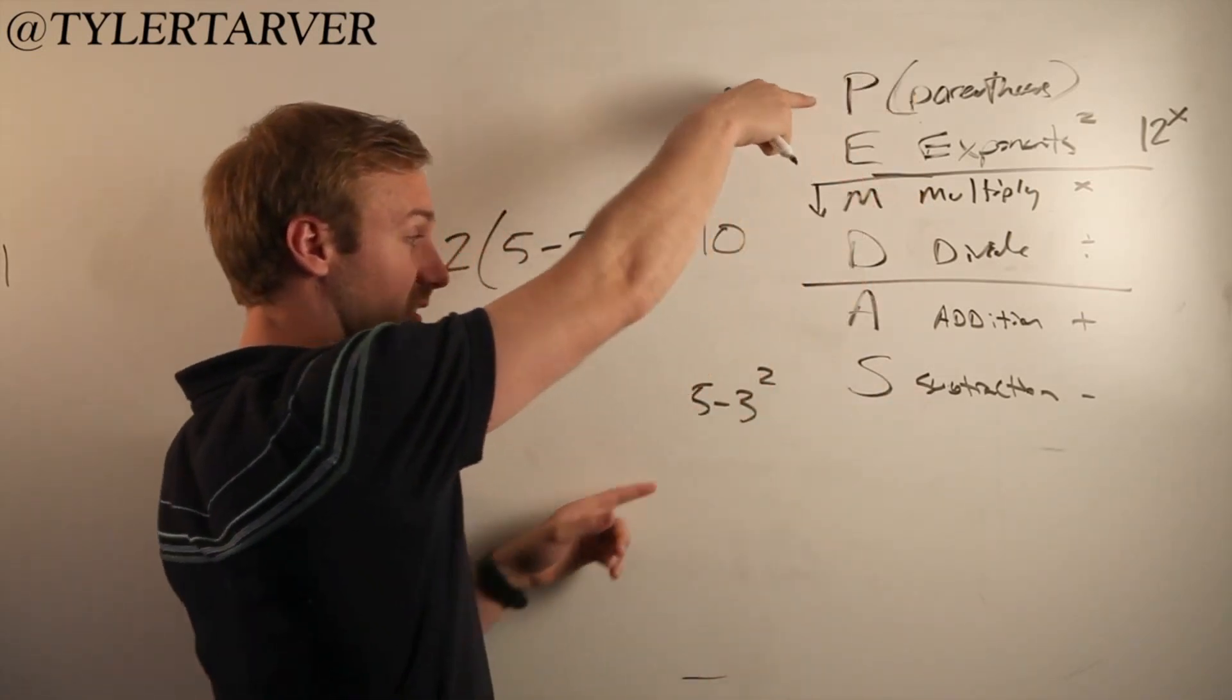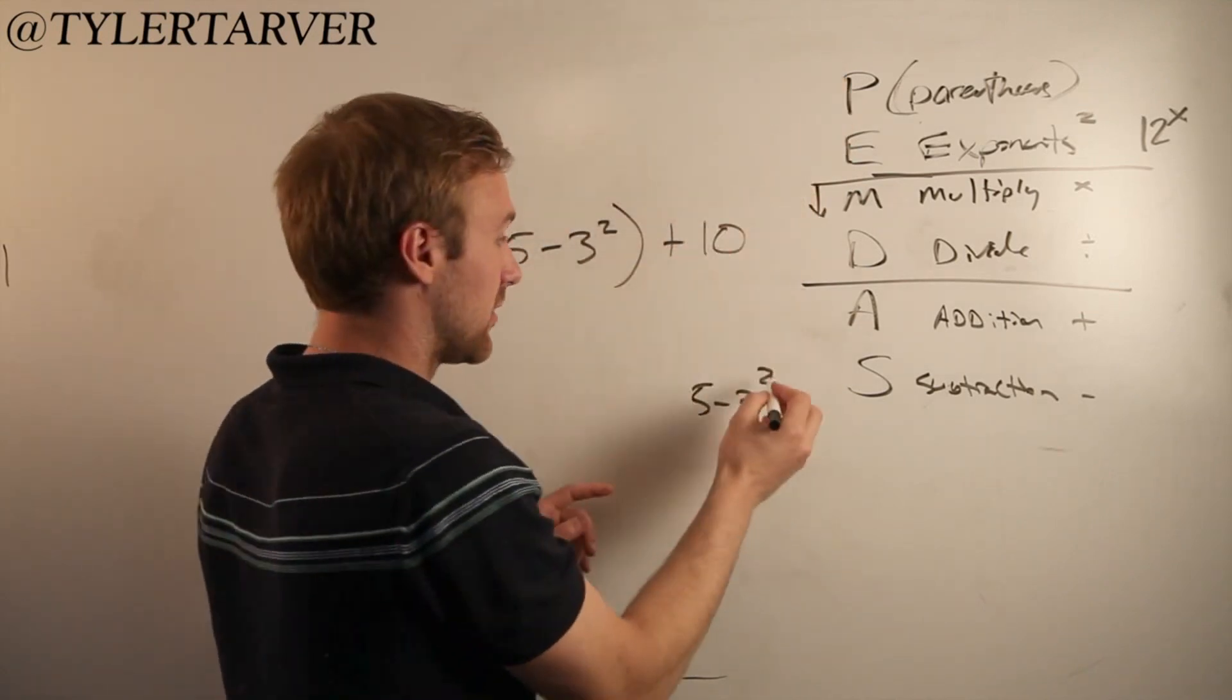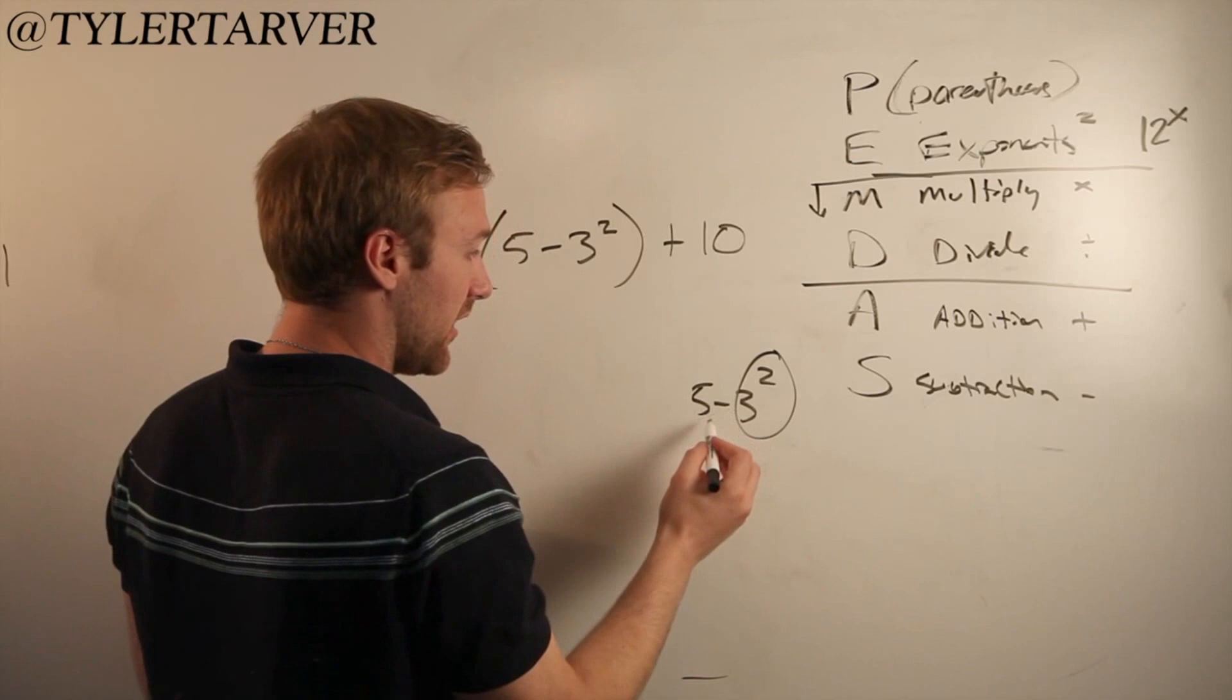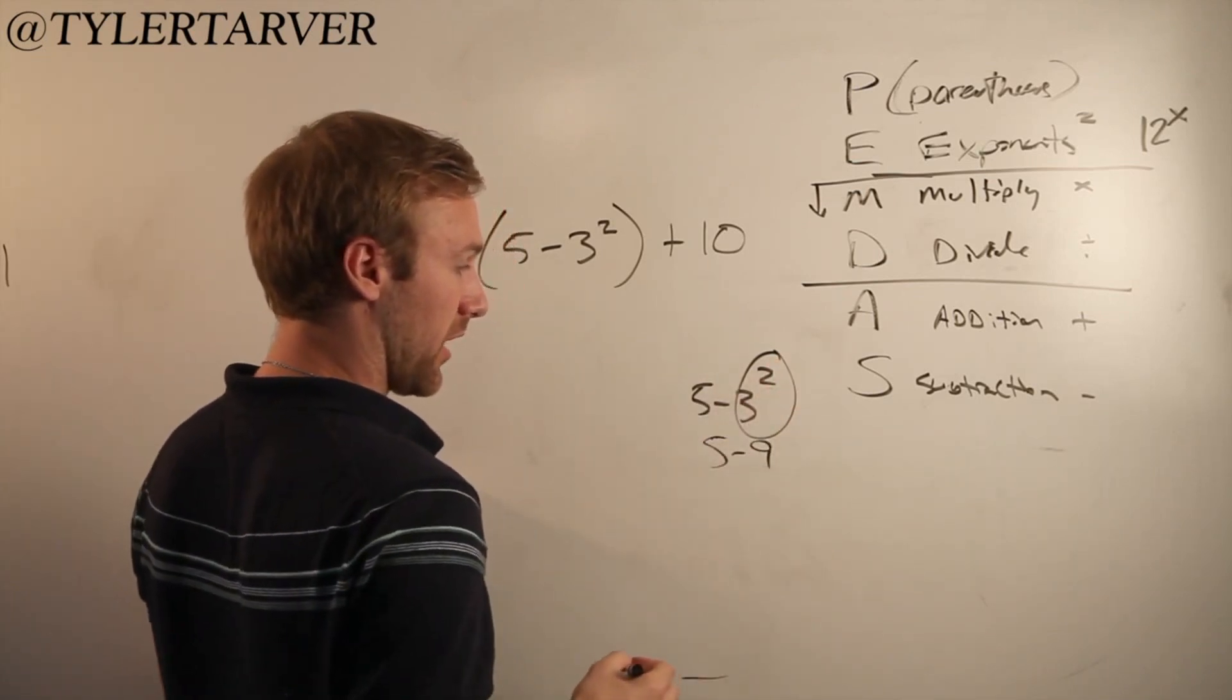Are there any more parentheses in here? No. Do we have any exponents? Yes. We've got this. So we need to do that. So 5 minus 3 squared, which would be 9.